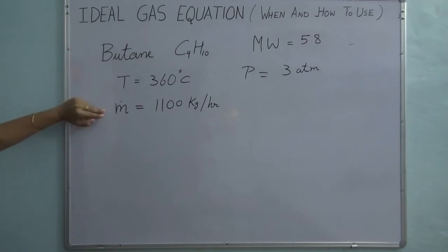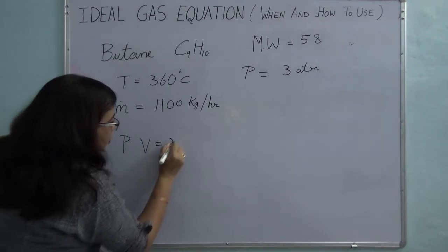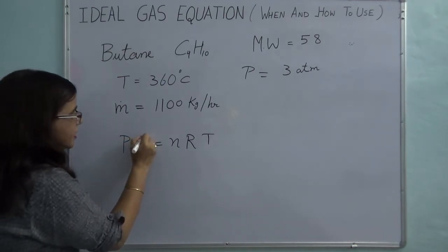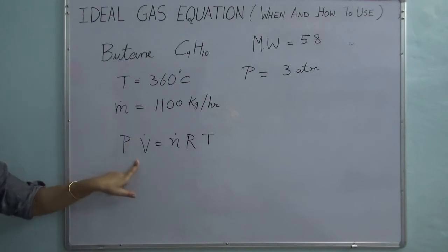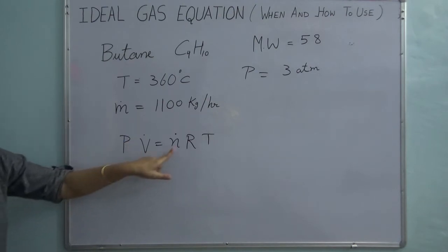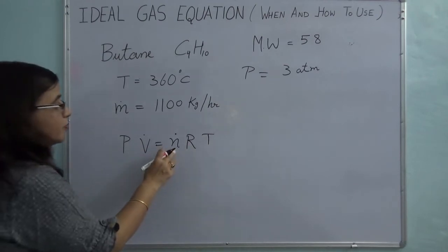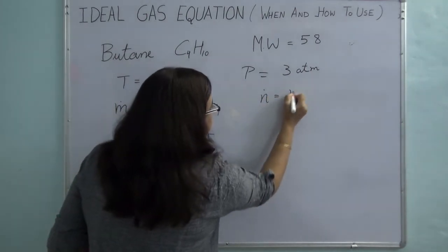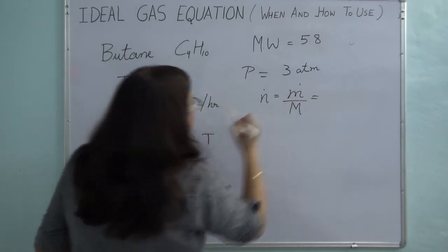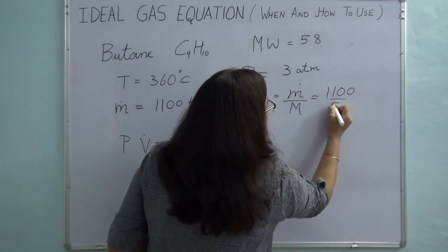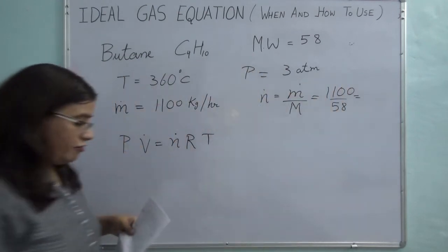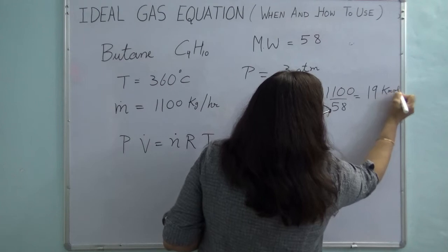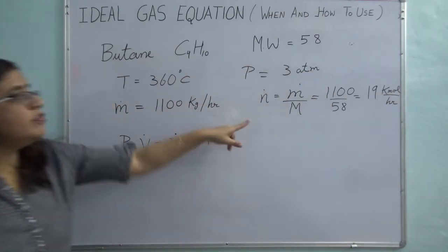Since this is a continuous process, I write the ideal gas law in terms of flow rates: P × V-dot = n-dot × R × T. First, calculate n-dot from m-dot: n-dot = m-dot / M = 1100 / 58 = 18.96 kmol/hr, approximately 19 kmol/hr.